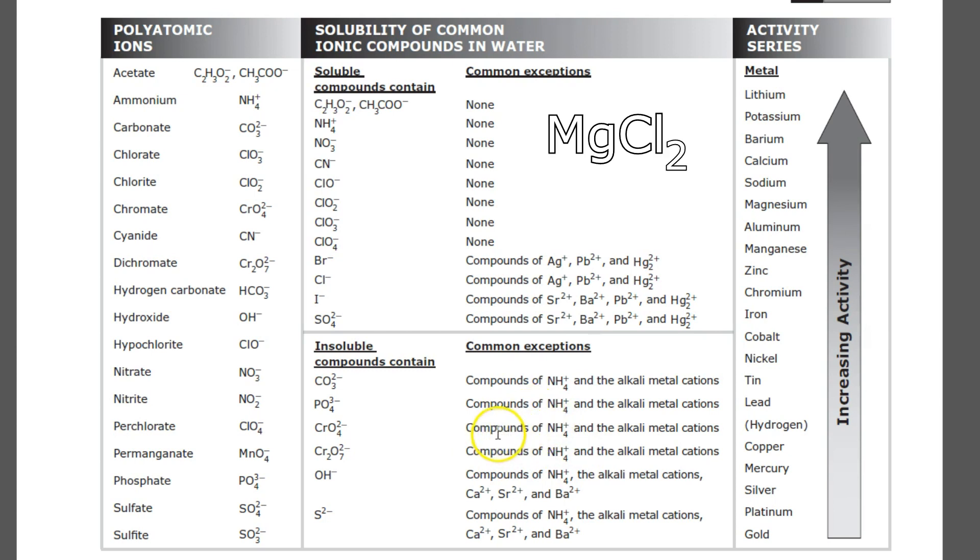So our first example is magnesium chloride. Chlorine is our negative ion, and that's right here in the top half. So that means chlorine is typically soluble except when bonded to silver, lead 2, and mercury 2. Well, magnesium is not one of those three. Therefore, it is not an exception and it follows the rule, which is that it's soluble. So magnesium chloride is soluble.